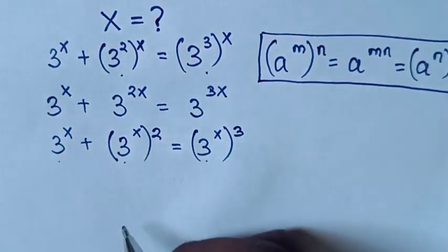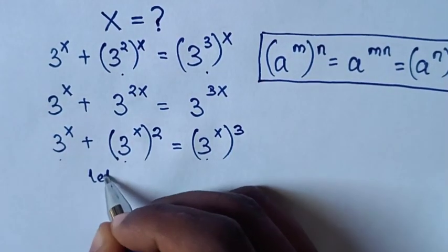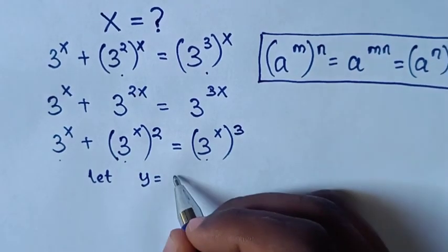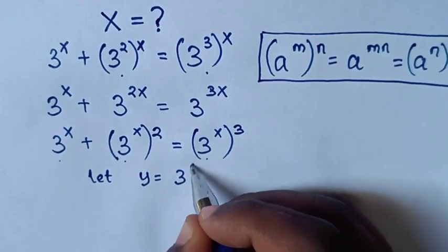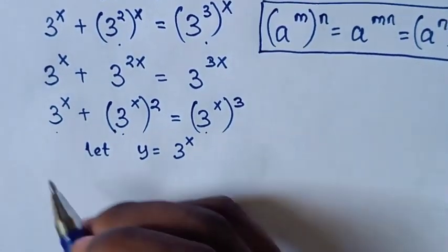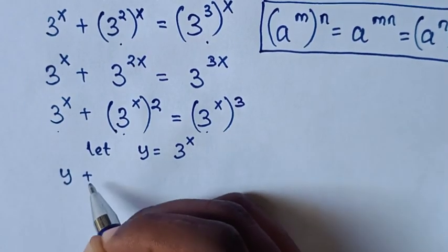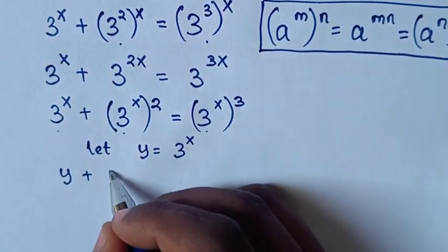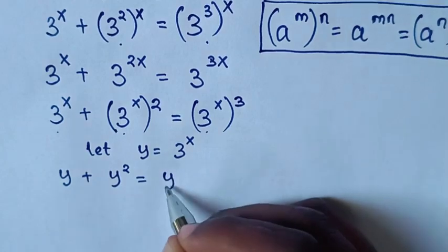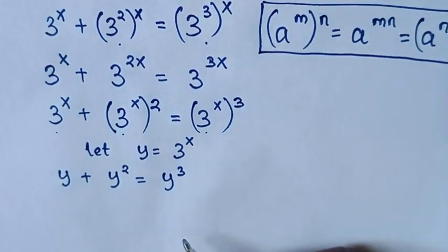Then here, 3 power x is common, so we let y equal to 3 power x. Then in our equation it becomes y plus y squared is equal to y cubed.